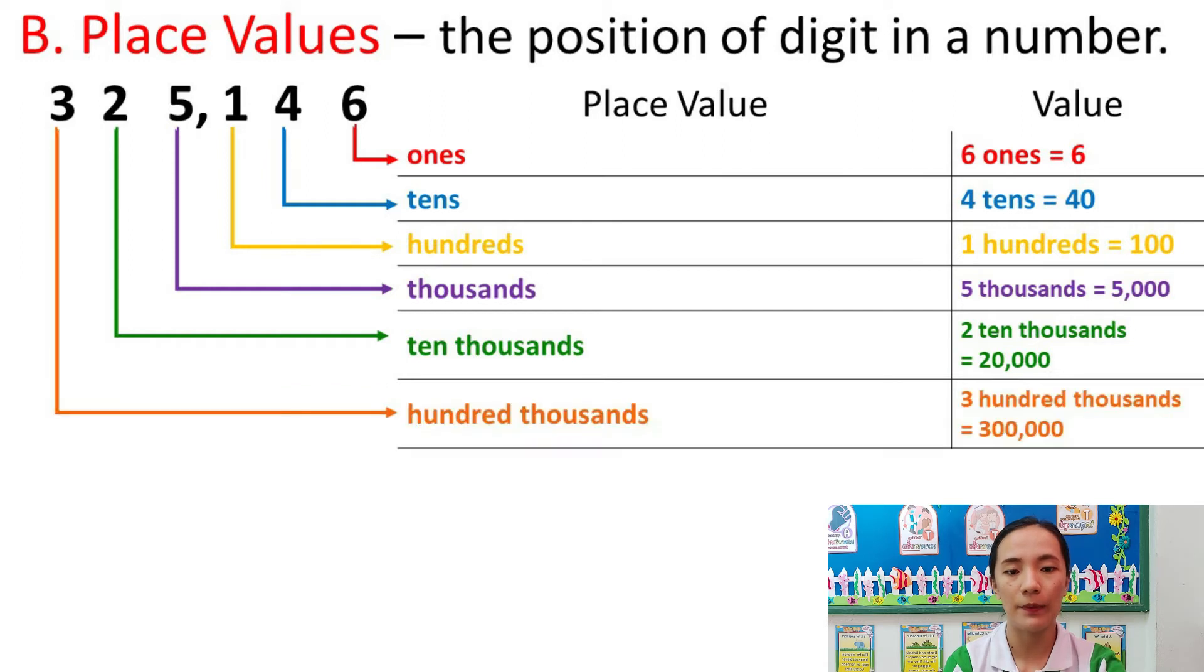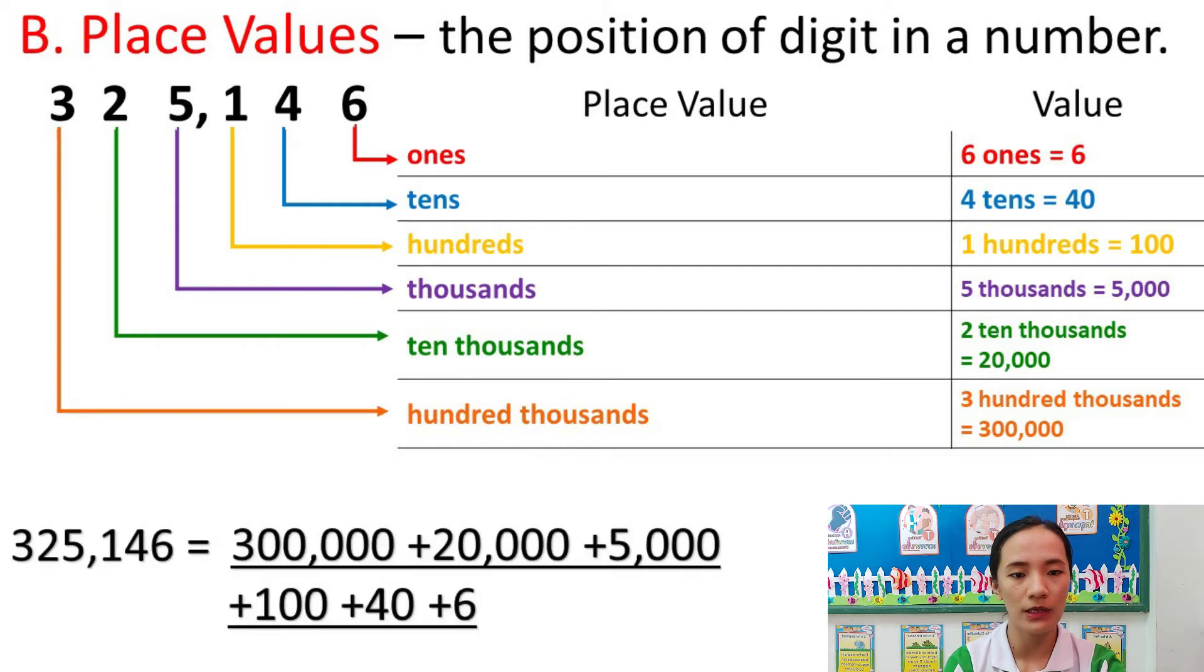And the last number, 3. Its place value is hundred thousands and the value is 300,000. So now, all in all, 325,146 equals 300,000 plus 20,000 plus 5,000 plus 100 plus 40 plus 6.